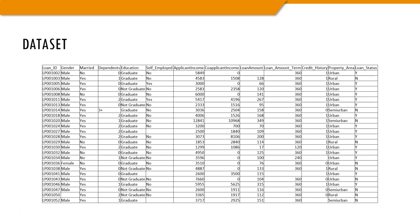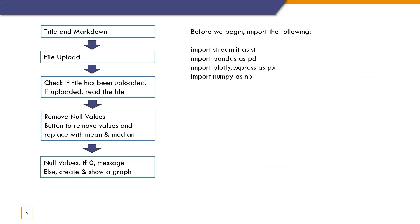We are going to be doing EDA on this file or any other file using our app. Let me take you through the codes relevant for the EDA activities. I am going to explain the codes using a flowchart because it helps you understand what is behind developing the EDA app. Before we begin, we have to import the necessary libraries: streamlit as st, pandas as pd, plotly.express for developing graphs, and numpy as np.